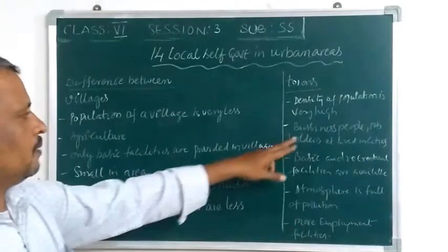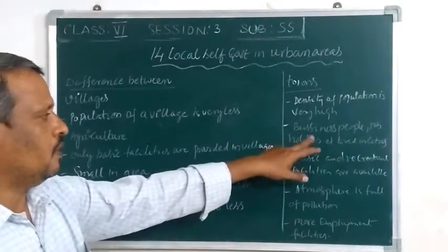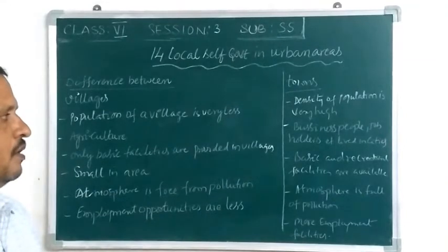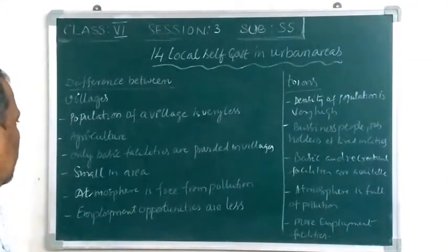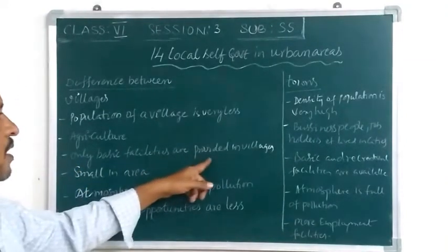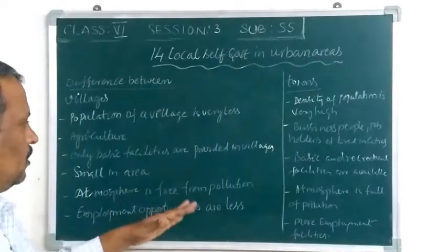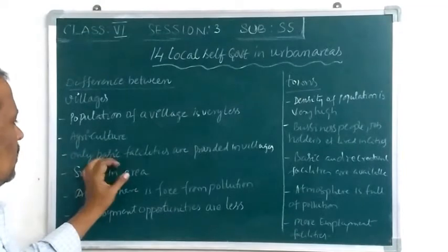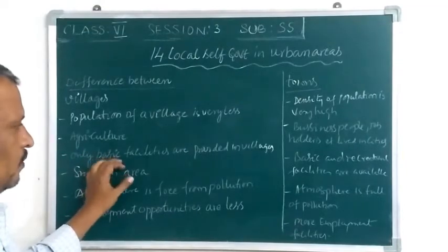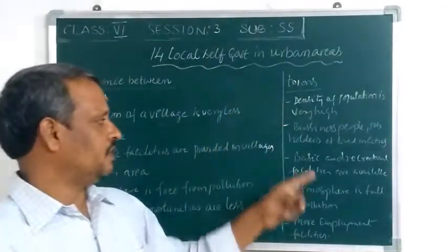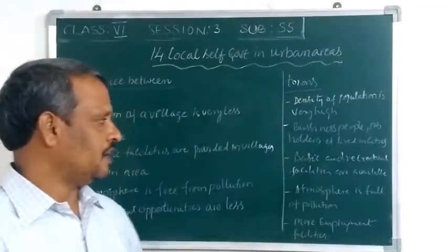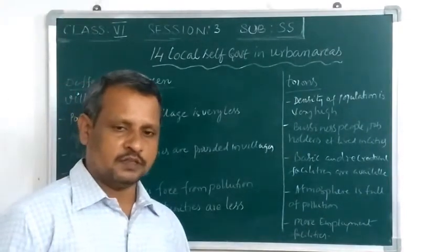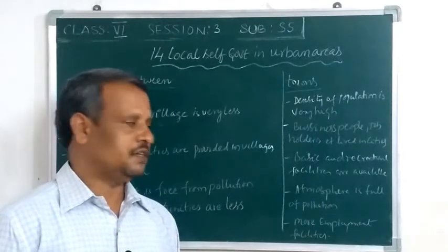Business people and job holders are the important people living in towns and cities. Only basic facilities are provided in villages — water, street lights, and roads. Whereas in towns and cities, both basic facilities and recreational facilities are available. Recreation includes parks and amusement parks, which are available in towns and cities.